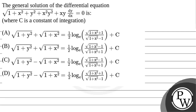Let us read this question. The question says: the general solution of the differential equation — a square root of 1 plus x squared plus y squared plus x squared y squared, plus xy dy by dx equals 0 is, where c is a constant of integration. Among which option will be correct?